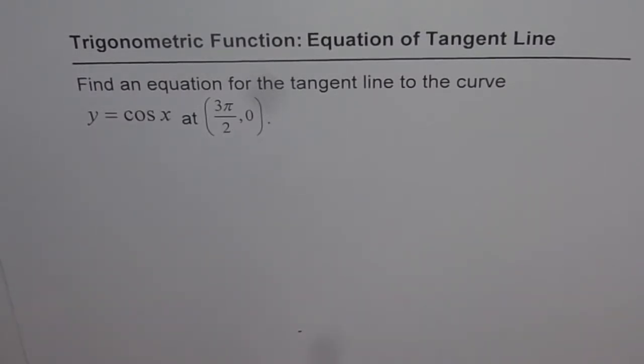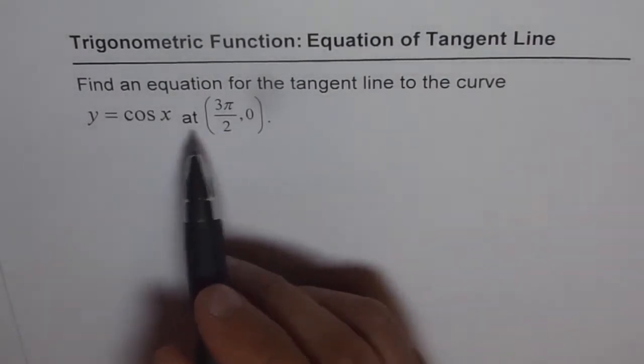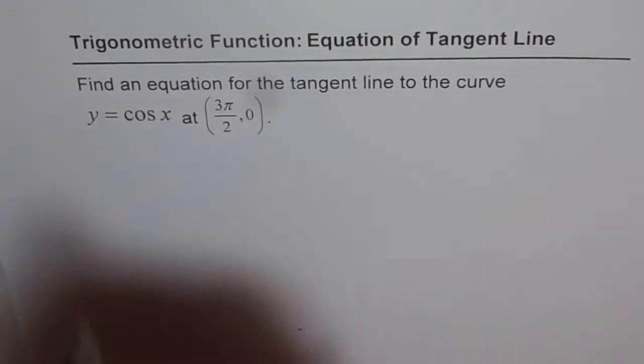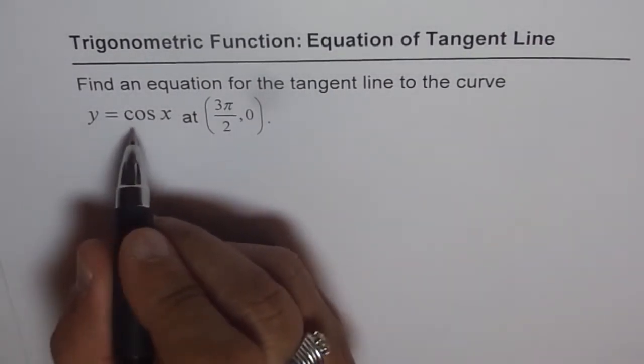Now to find the equation of tangent line, we need slope and a point. While the point is given to us, we just need the slope at this point. So let's find the slope by finding the derivative.